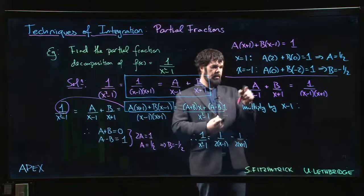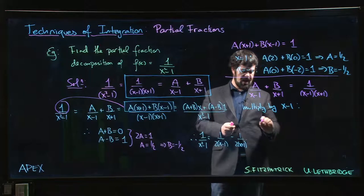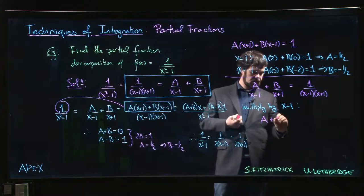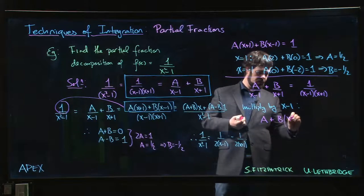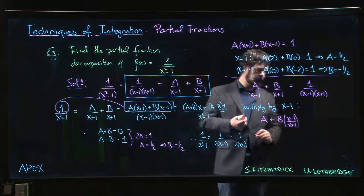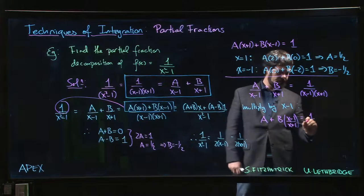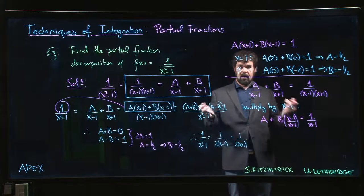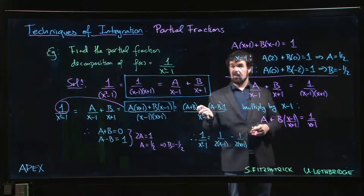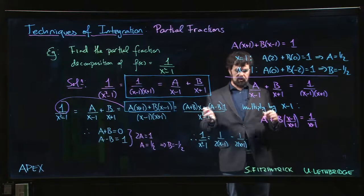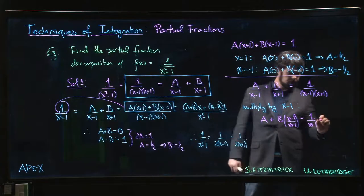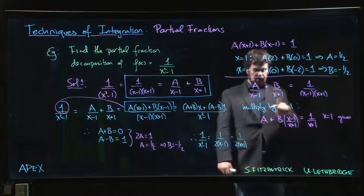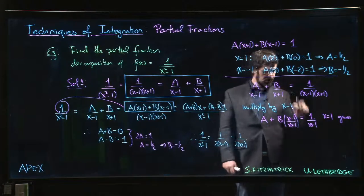Well then here we just get A—x-1 over x-1 cancels—plus B times (x-1)/(x+1) equals 1/(x+1). Again, this should be valid for all values of x, so we look for a convenient one to plug in. x equals 1 sure is convenient, and if we put in x equals 1, that immediately gives me A equals 1/2.